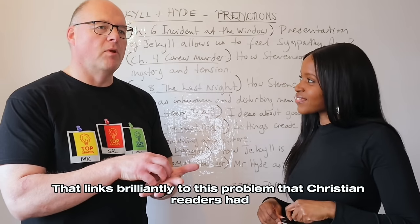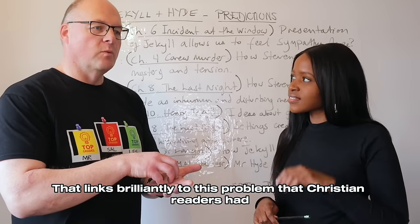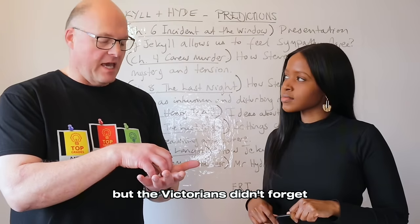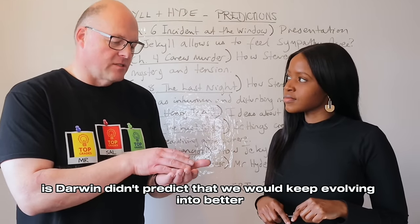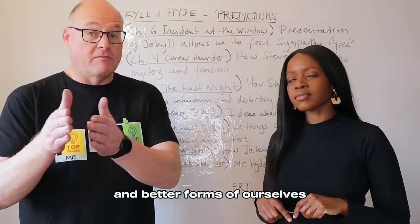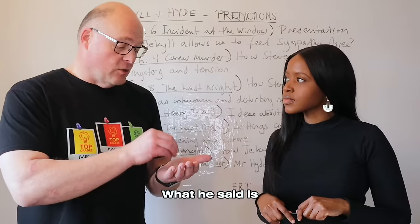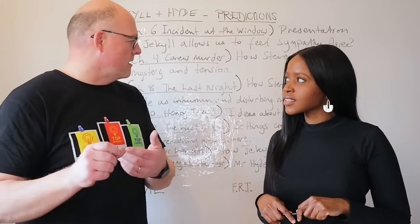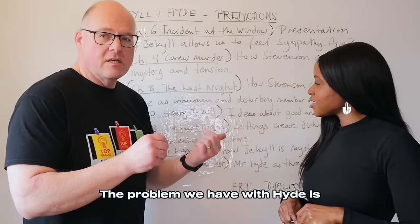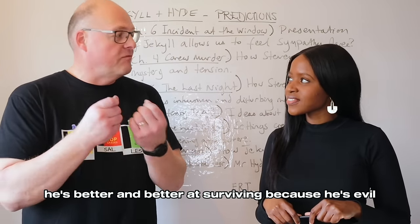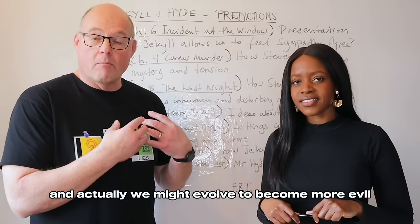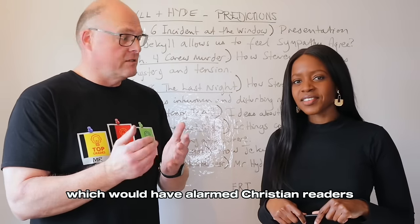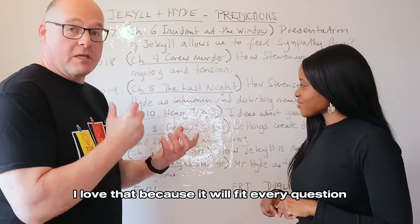What Stevenson is trying to show is that we have this duality within all of us. That links brilliantly to the problem that Christian readers had with Darwin's theory of evolution. What we forget now — but the Victorians didn't — is that Darwin didn't predict we would keep evolving into better and better forms of ourselves. He said we'd keep evolving to be better at surviving. The problem with Hyde is he's better at surviving because he's evil, meaning we might evolve to become more evil rather than less, which would have alarmed Christian readers.